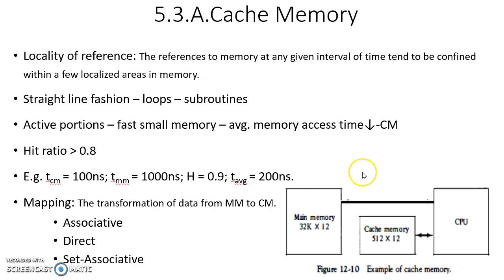That is why we have memories with different access times. Memory access time is the time required to fetch the data from memory — to reach the memory location and then retrieve the data.